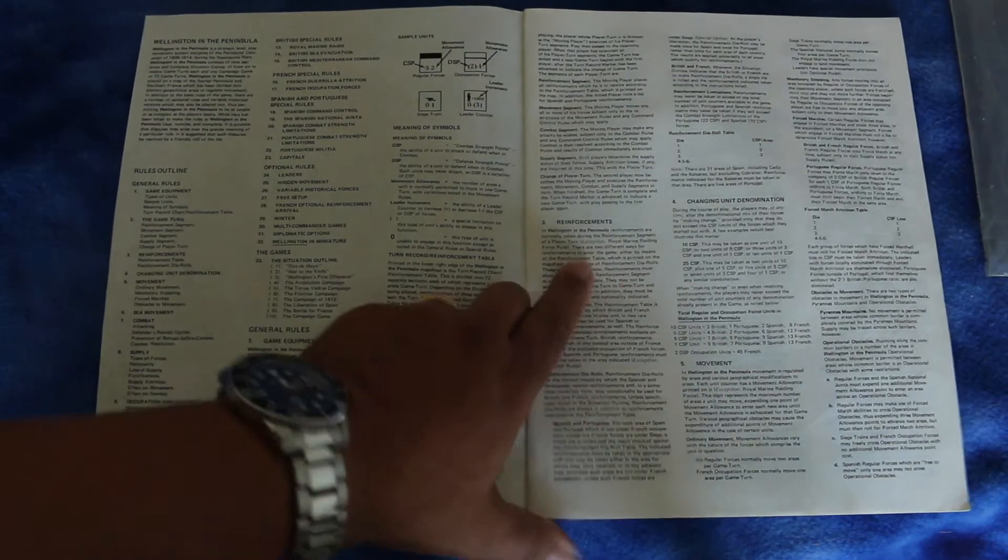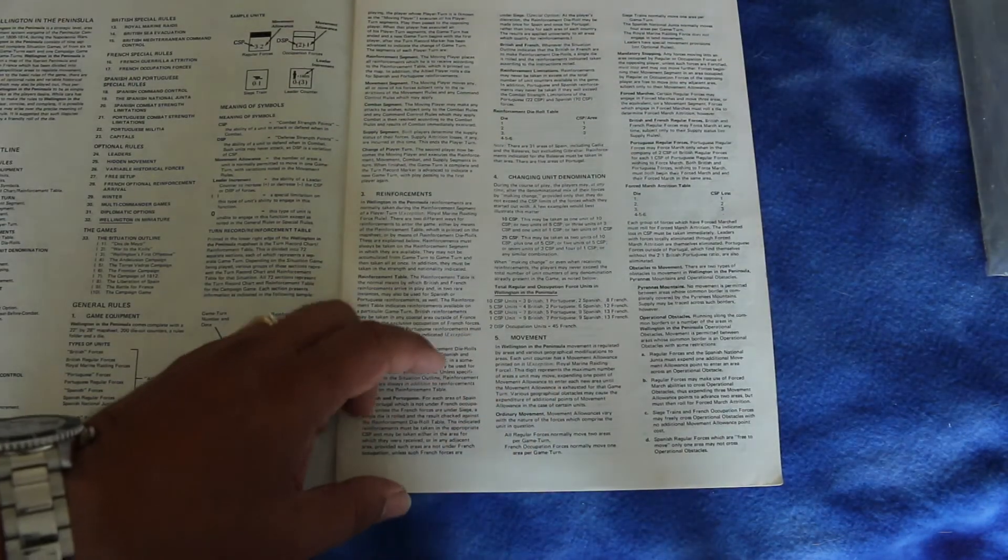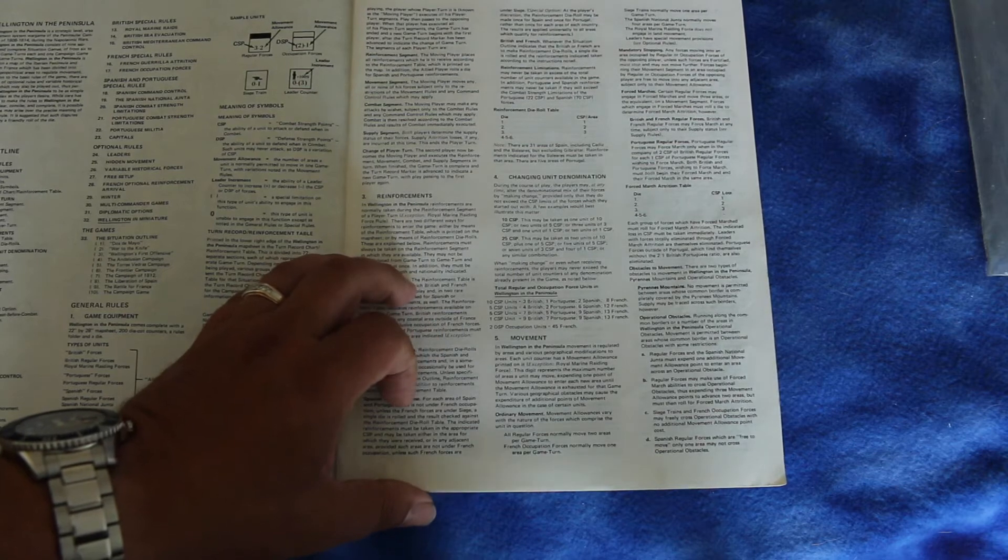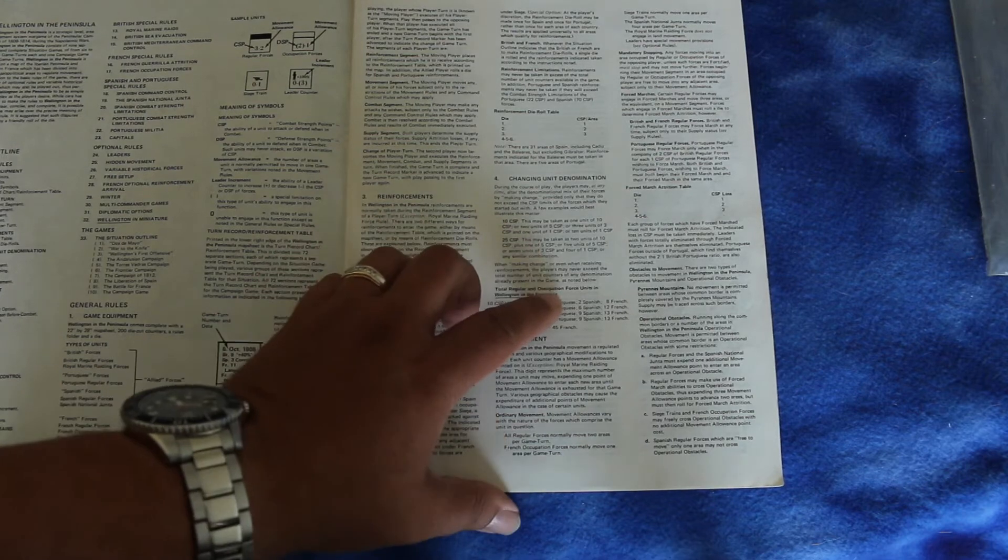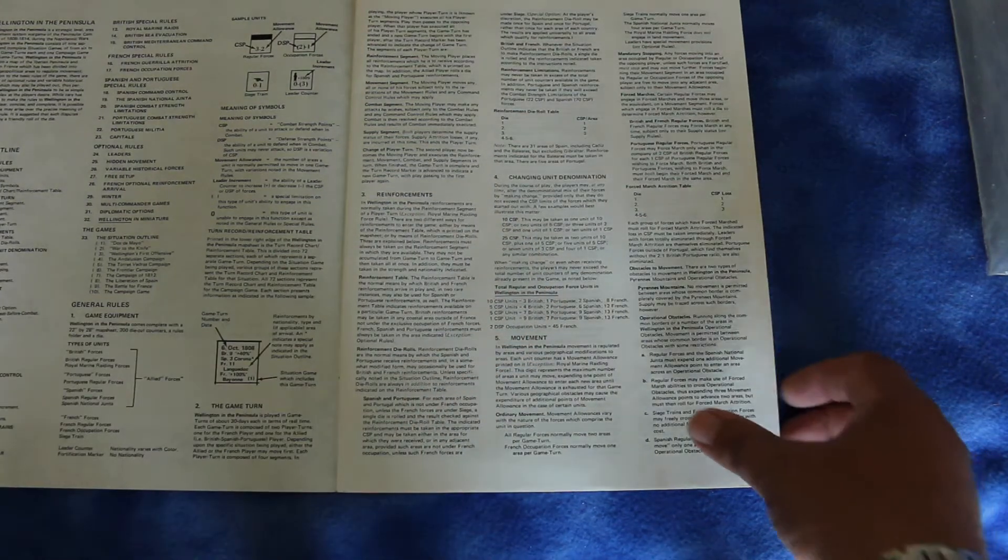Alright, now it's going over reinforcements, changing unit denominations. So if you have one that's ten strength points, you can exchange it for two five strength point units.